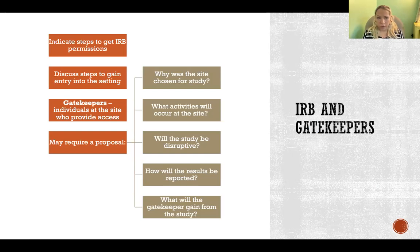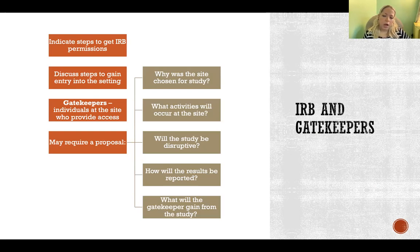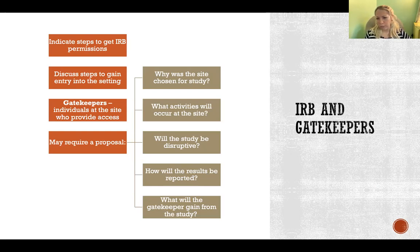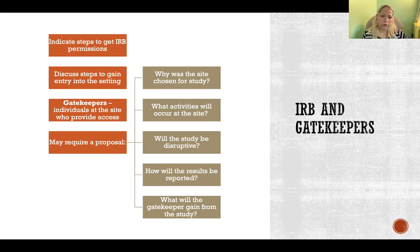You'll also need to discuss your plan for getting IRB approval and for accessing the setting or participants. Indicating steps to get IRB permission often is just a simple statement that you are going to apply for IRB approval. But there could be more to that discussion depending on possible ethical considerations — for example, if your study involves some kind of deception, you'd want to discuss how you're going to get IRB approval in light of that concern, and highlight why it is in fact an ethical study to conduct.